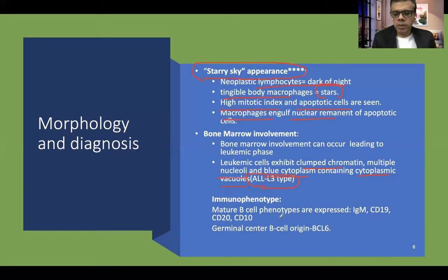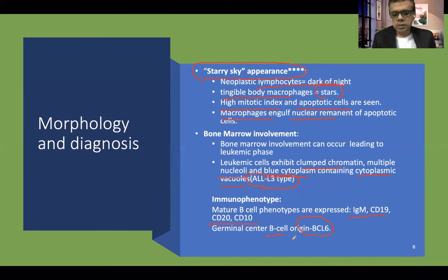Regarding immunophenotype, mature B-cell markers are expressed: IgM, CD19, CD20, and CD10 are well expressed in the neoplastic cells. The germinal center proliferation marker BCL6 is also expressed. Importantly, BCL2 — which is seen in many other lymphomas — is uniformly absent in Burkitt lymphoma. So the profile is: BCL6 positive, BCL2 negative, with CD19, CD20, and CD10 all positive.